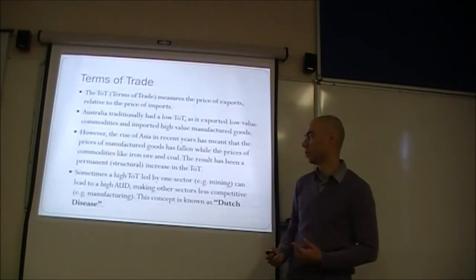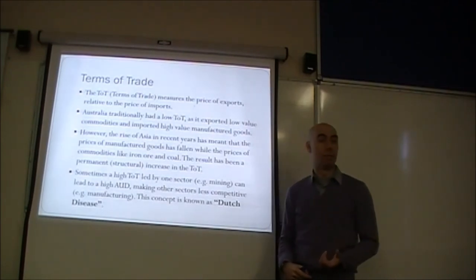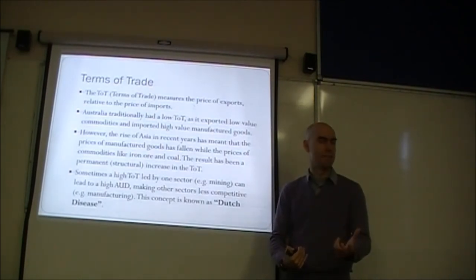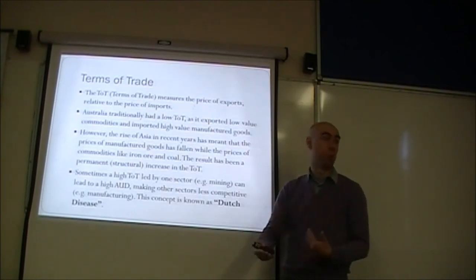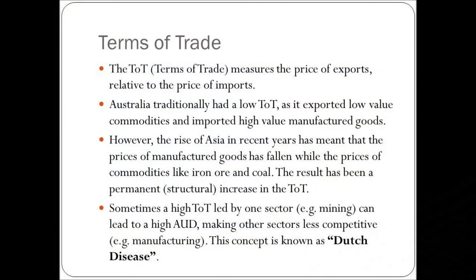It's the rise of Asia that has caused that change to happen. Instead of having high-value manufactured goods that Australia would import and low-value agricultural and resource goods that would be exported, that has flipped around. Now manufacturing is the cheap goods and resources are the more expensive goods. Even food has increased in value quite a bit. Sometimes high Terms of Trade led by one sector — for example mining — can lead to a higher Australian dollar, making other sectors less competitive, such as manufacturing. We've seen that in Australia.